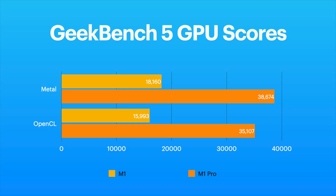Testing GPU compute benchmarks: for Metal, the M1 scored 18,160 while the M1 Pro scored 38,674 — more than double. For OpenCL, the M1 scored around 15,993 while the M1 Pro scored around 35,107, again more than twice the GPU performance. So in both GPU benchmarks, the M1 Pro delivers over double the GPU efficiency.